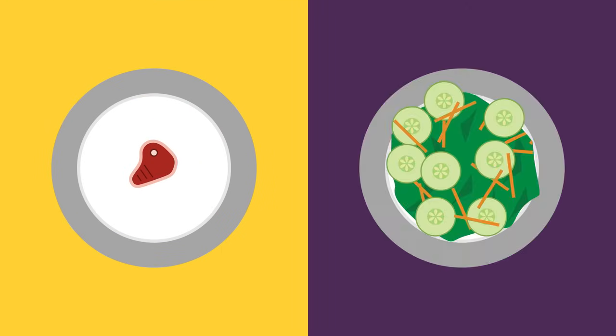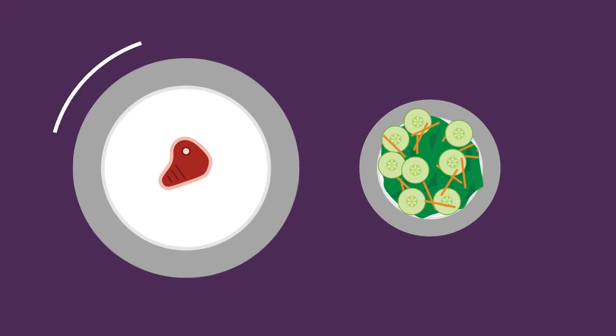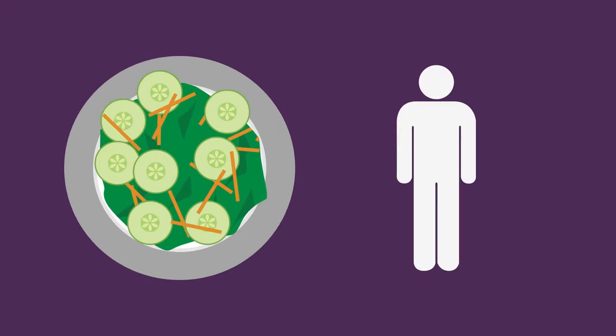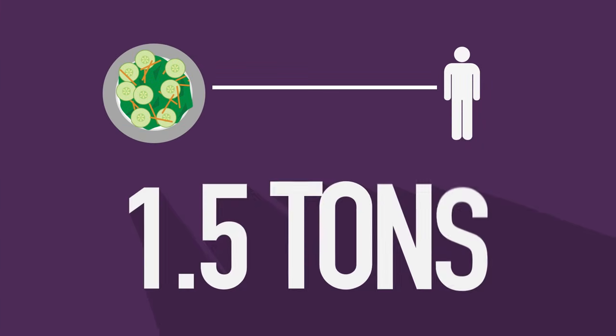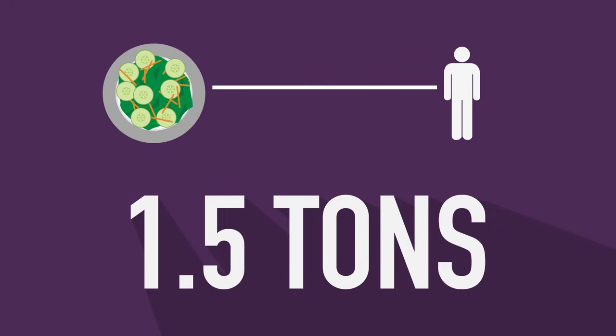Eat less meat or no meat at all. By replacing an omnivorous diet with a vegan diet, the average person can prevent the emission of about 1.5 tons of CO2 into the atmosphere.